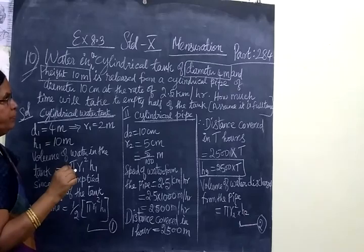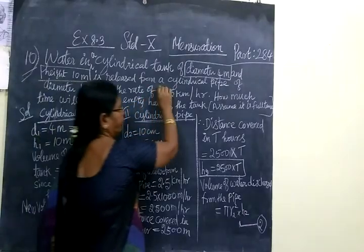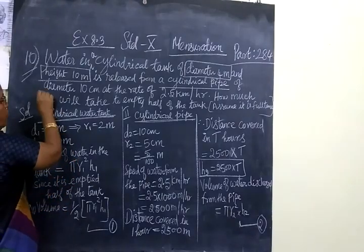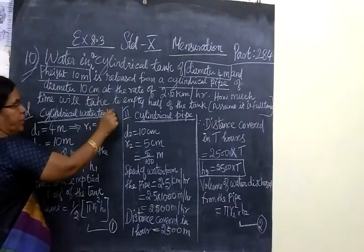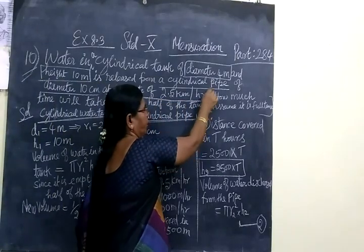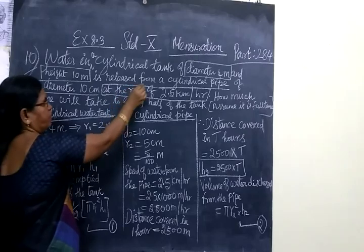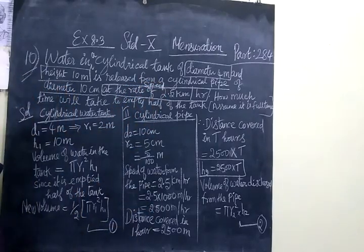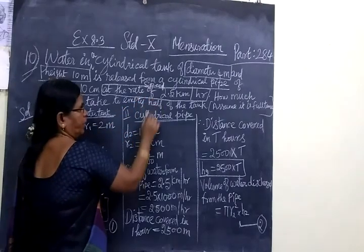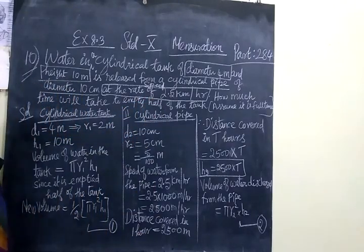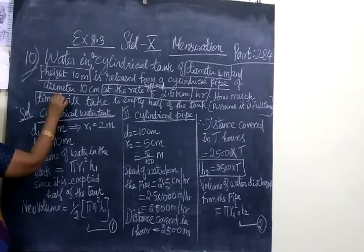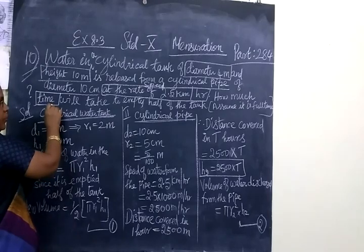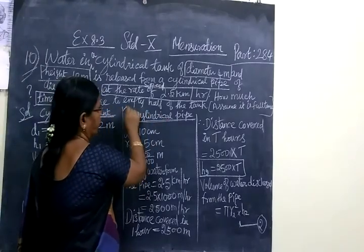The water in the tank is released through a cylindrical pipe whose diameter is 10 centimeters at the rate of 2.5 kilometers per hour. At the rate of means speed of water. Then how much time will it take to empty half the tank?